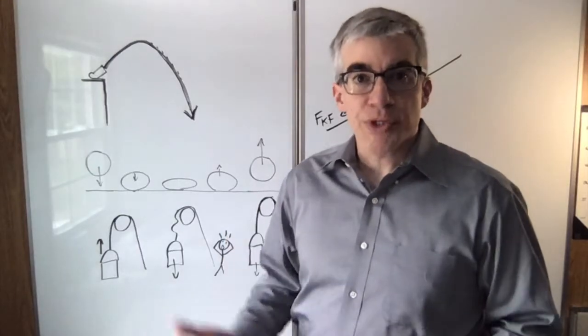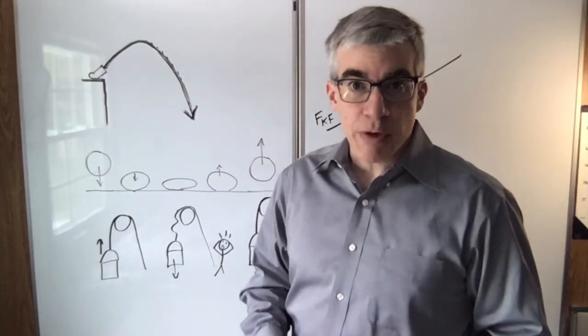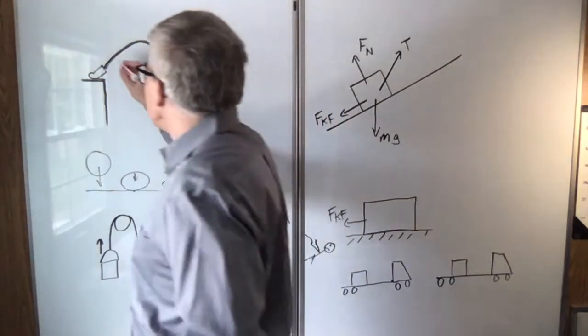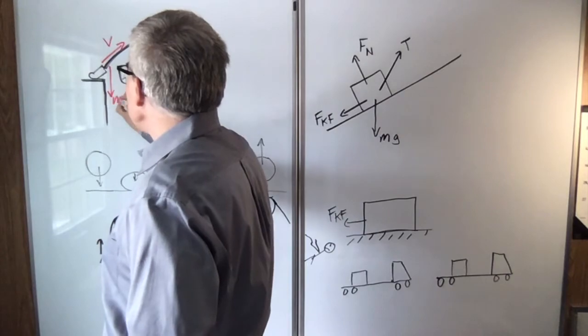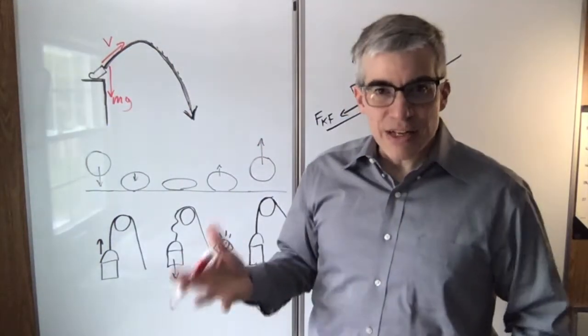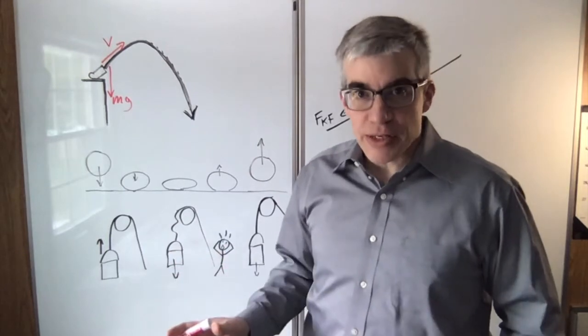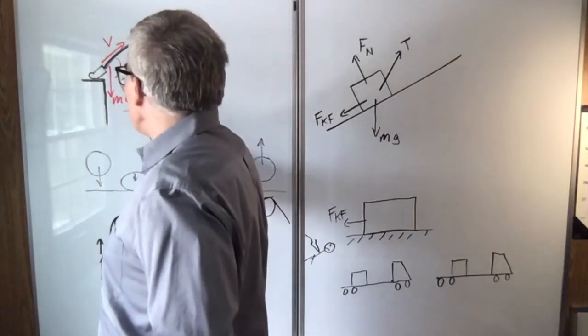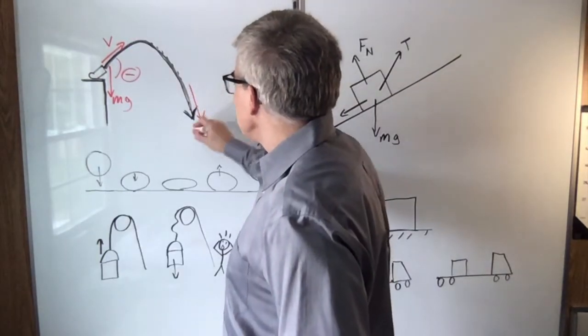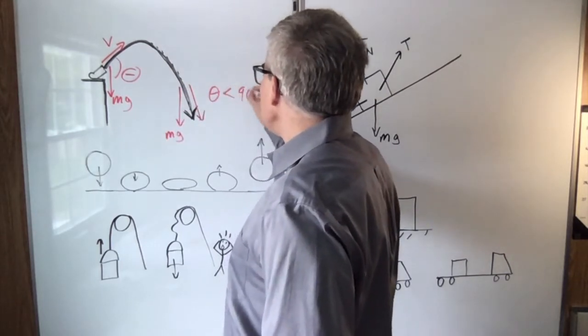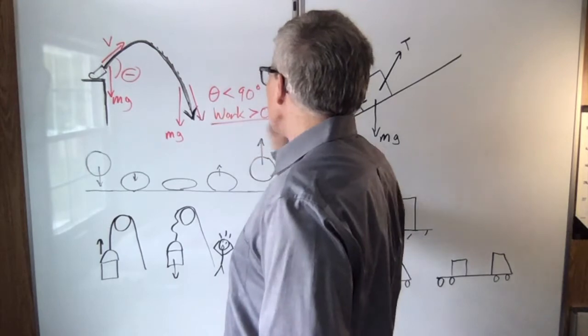Is the work done by a force positive, negative, or zero? You shoot something into the air, it rises, and then it falls. When it's moving upward and gravity is downward, they're pointing in kind of the opposite direction. The angle between them is more than 90 degrees, so that's negative work. And when the velocity is this way and gravity is that way, the angle is less than 90 degrees, so the work is greater than zero.